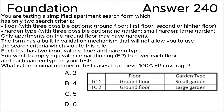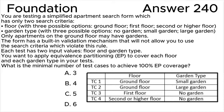We need two more test cases to cover the two other floor partitions and the remaining garden type partition of no garden. Test case three: first floor, no garden. Test case four: second or higher floor, no garden. In summary, the correct answer is B.